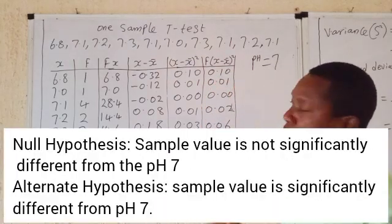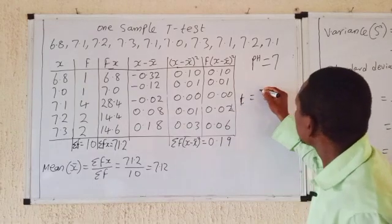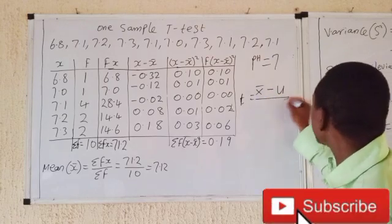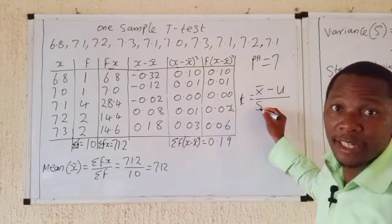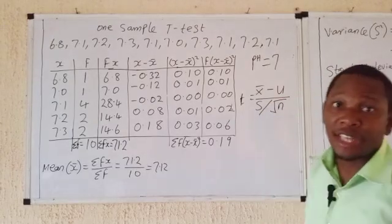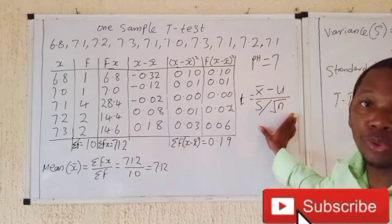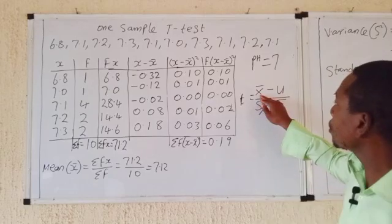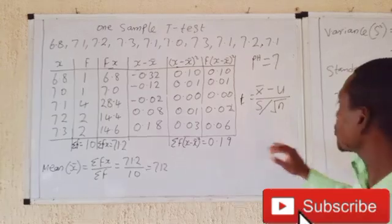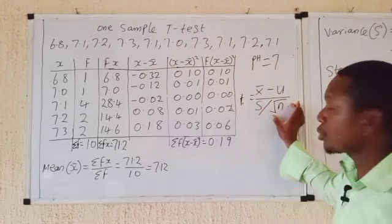In a one-sample t-test, the formula is: the sample mean minus the population mean, all over the standard deviation divided by the square root of n, where n is the number of samples taken. So you need to find the sample mean — the population mean is already given as 7 — the standard deviation, and the square root of n.